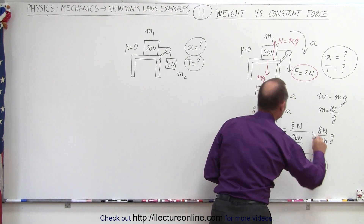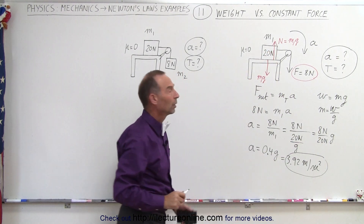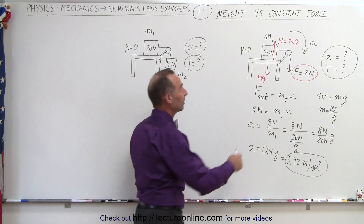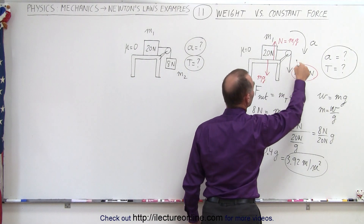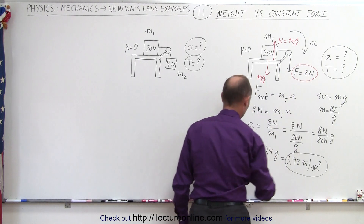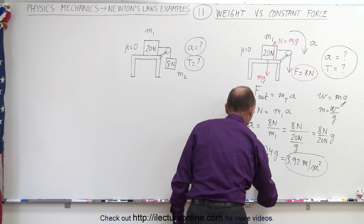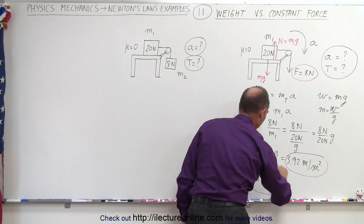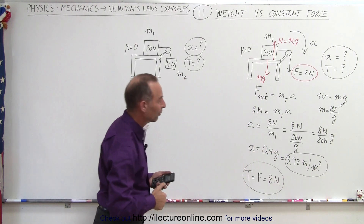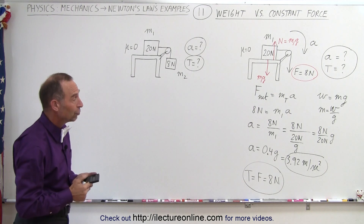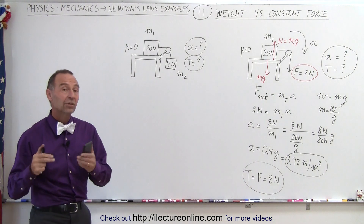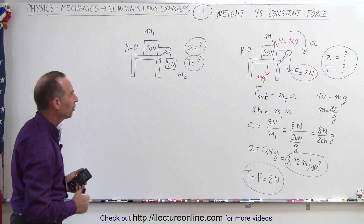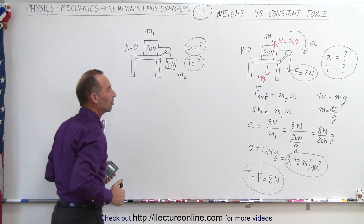So that's the acceleration for the right-side situation: 3.92 meters per second squared. What about the tension in the string? The tension must equal the force by which you pull on the string, so tension equals force, which equals 8 newtons. That's the right-side situation: acceleration of 3.92 meters per second squared and tension equal to the applied force of 8 newtons.